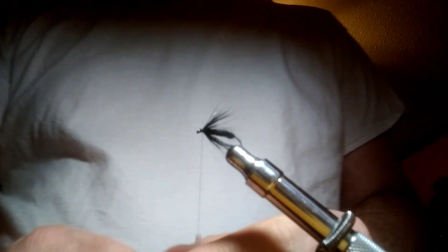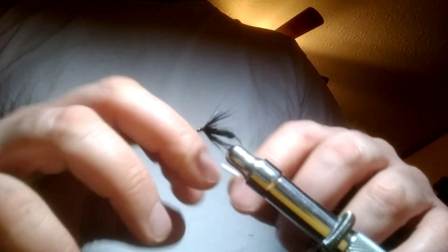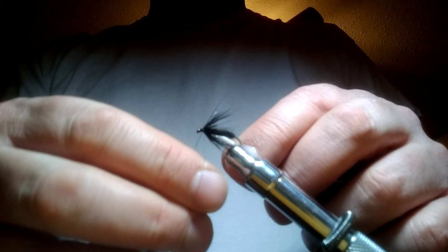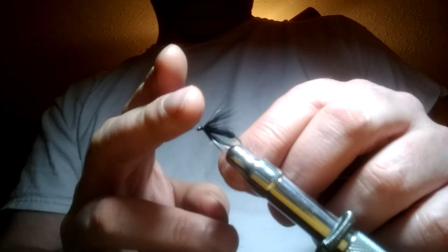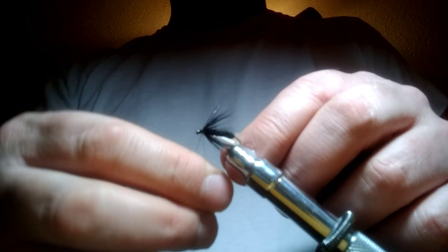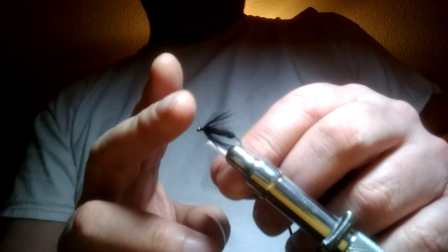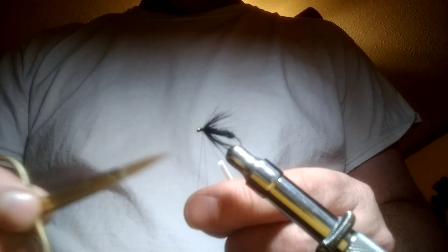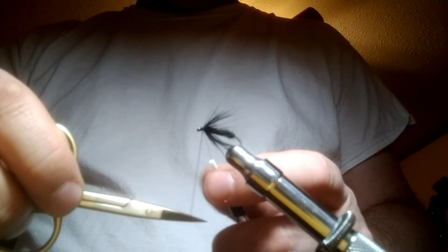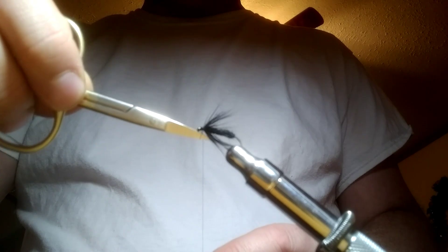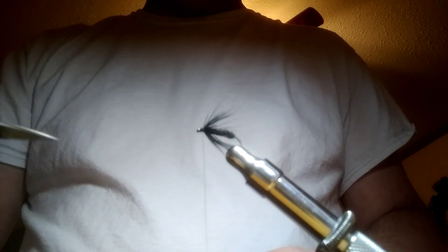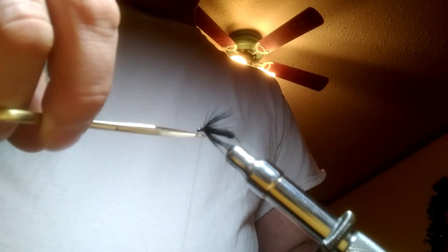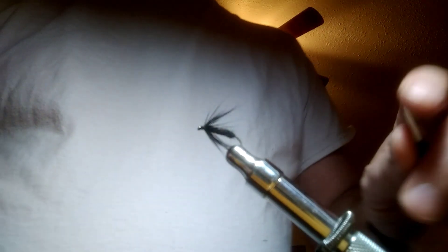So what I'm going to do now is a whip finish. I just do this by hand. Take the thread, wrap it around, get it over the eye of the hook, wrap it around. Again, the eye of the hook. Hold that nice and tight. Put something in there to draw it up to the hook. And there we are, we are finished. Time to cut off the thread.